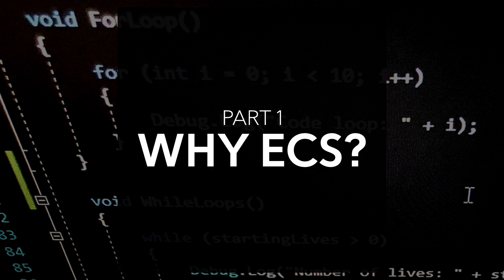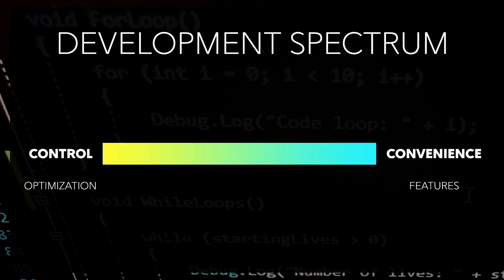Part 1: Why ECS? Unity development, C-sharp scripting, and programming languages in general live on a spectrum. On one end is control, which can lead to optimization — control of memory and processing, which can be used to make a computer run your code as efficiently as possible.